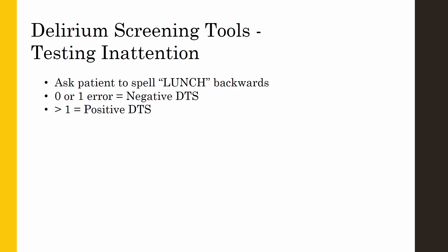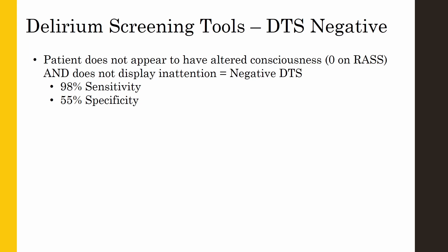If the patient does not show an altered level of consciousness — in other words they have a RASS of zero — the nursing staff will test for inattention. This will be done by asking the patient to spell the word 'lunch' backwards. If the patient makes more than one error, the DTS is considered positive and additional assessment, the BCAM, is required. If the patient does not show an altered level of consciousness and does not display inattention, the patient would be considered DTS negative and delirium can then be ruled out without further testing.